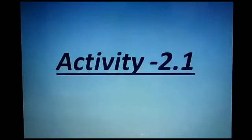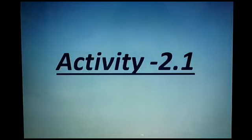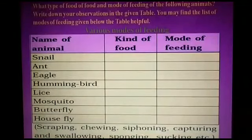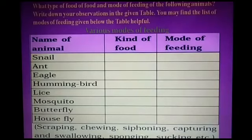The next one is Activity 2.1, the first activity of chapter 2. In this activity, a table is given with the names of some animals, and you will fill in the kind of food these animals eat and their mode of feeding.